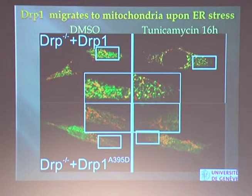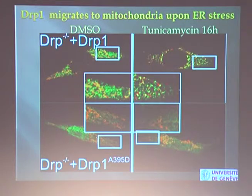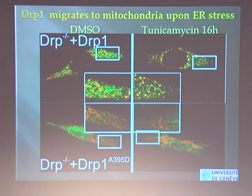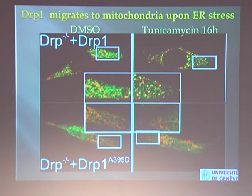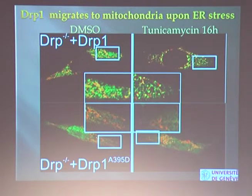Coming back to DRP1 — if you induce stress for a longer time, you observe that DRP1 in green moves from the cytoplasm to mitochondria, shown here with DRP1 in green and mitochondria in red. If you have the mutant in your cells, the mutant does not move to mitochondria. So what is DRP1 doing on mitochondria after induction of ER stress?